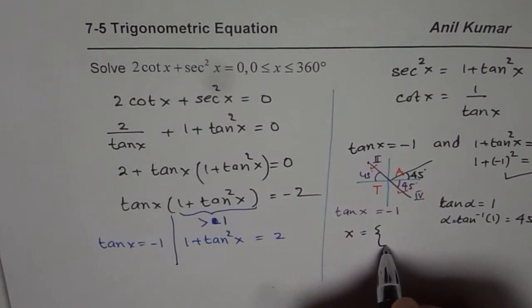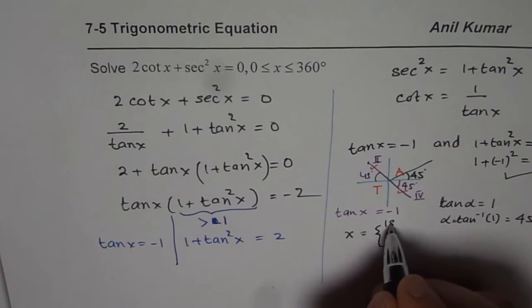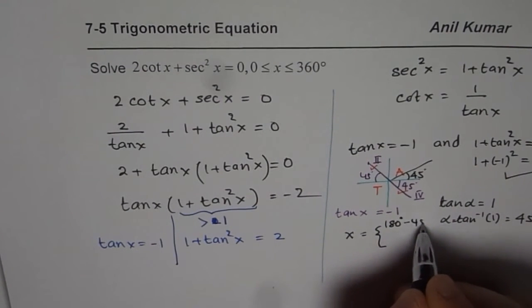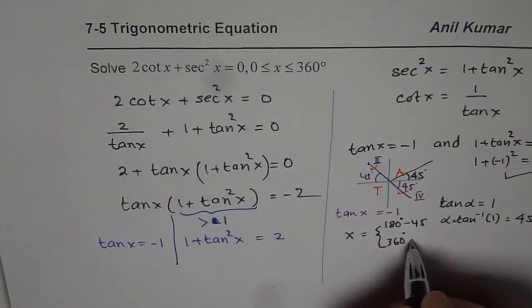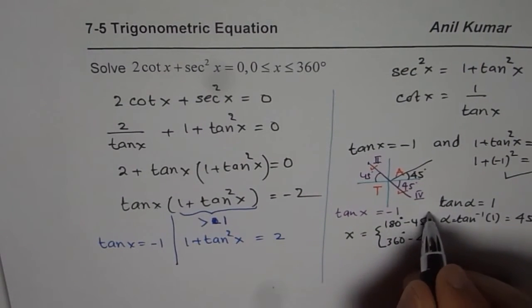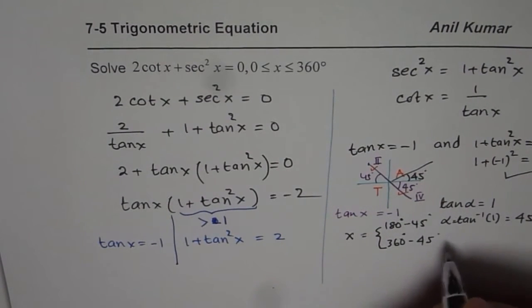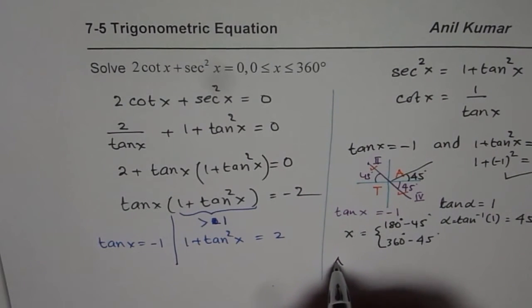Now find out the answer. So we get x as two values. One is 180 degrees minus 45 and the other is 360 degrees minus 45. So these are the two solutions for the given equations. We can write down our answer.